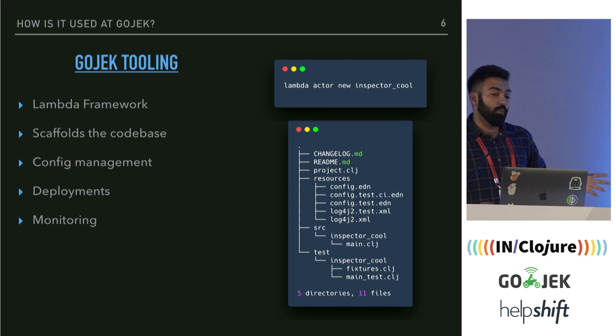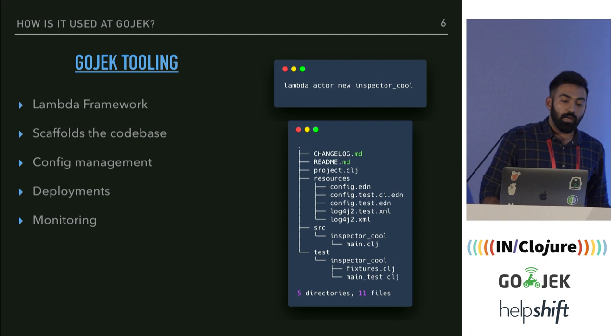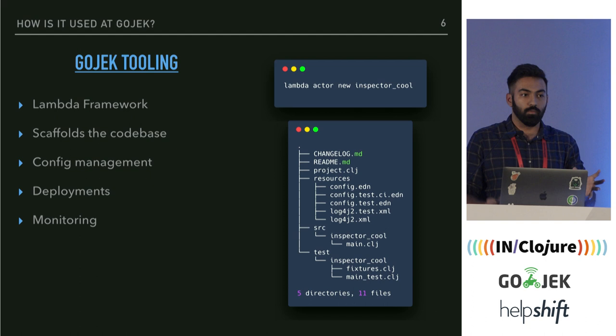Before explaining that, I'd like to explain what is possible with the correct tooling around Ziggurat and how we use it at Gojek. I'm part of team Lambda and we've built a tool also called Lambda. What it does is scaffold code, let you edit config for services, and let you deploy services.